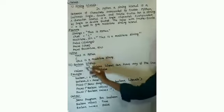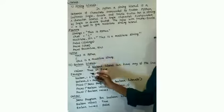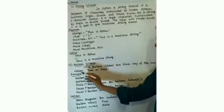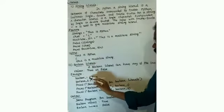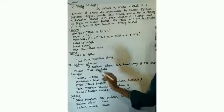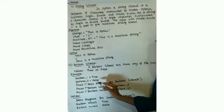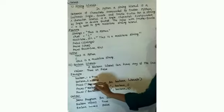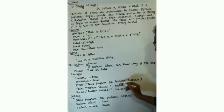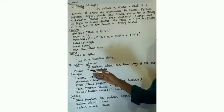Next one: boolean literals. A boolean literal can have any of two values — True or False. Example: boolean_one is a variable with value True assigned. Second variable boolean_two has the value False assigned.